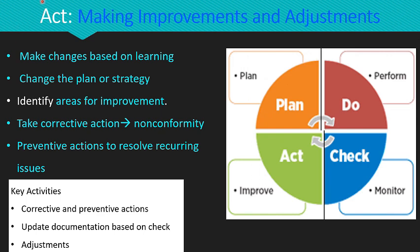The final stage of the PDCA cycle is Act — making improvements and adjustments. This is where we make changes based on what we learned in the check stage. If we are not meeting our goals, we need to make adjustments for the next cycle by either changing our plan or trying different approaches. The act stage is all about improvement; we take what we learned in the check phase and apply it, then start the PDCA cycle again from planning.